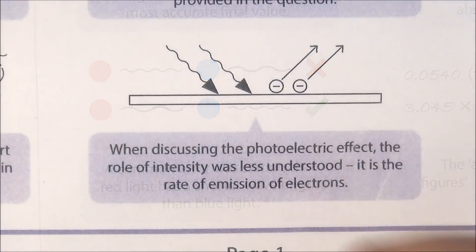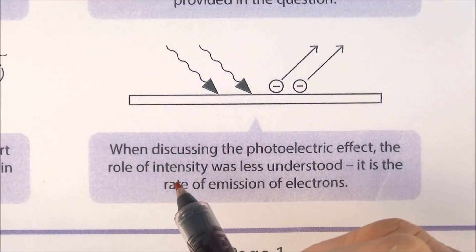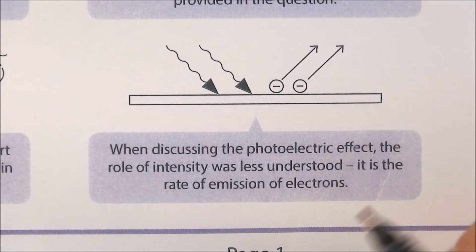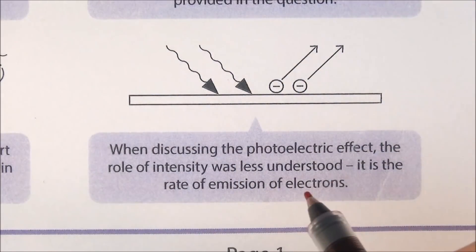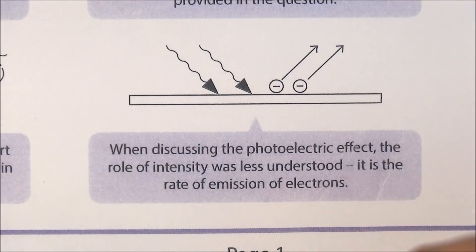Number five: the photoelectric effect. You've got to remember what the word intensity means. Basically, the intensity of the wave is in terms of the photoelectric effect the rate of emission of electrons. If you double the intensity, you double the number of electrons which are being given off per second.